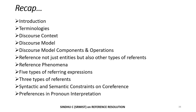We will finish with a small recap. We started with an introduction to what is reference and what is resolution. Then we went on with multiple terminologies — referring expression, referent, and so on. Then we understood what is discourse context, what is discourse model, and its various components, along with two fundamental discourse model operations. We also saw that discourse is not only about reference entities but also other types of reference. Then we saw the reference phenomena — five types of referring expressions and three types of reference. Finally, we saw syntactic and semantic constraints on coreference and a few preferences in pronoun interpretation, as well as the algorithms used to resolve all these reference problems. Thank you.